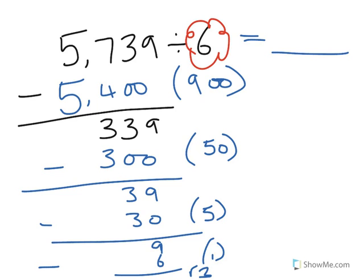Don't forget to put the other one in there. Now, we go back to adding up the numbers in the brackets, which are 900, 50, 5, and 1. So that would give me 956, with a remainder of 3.